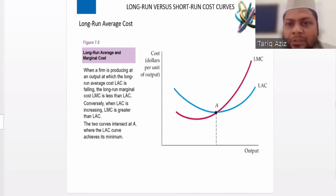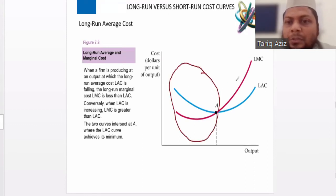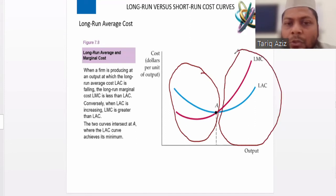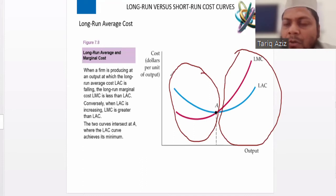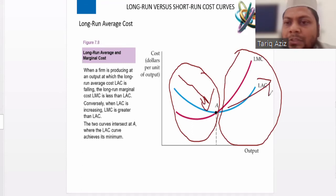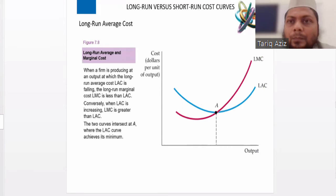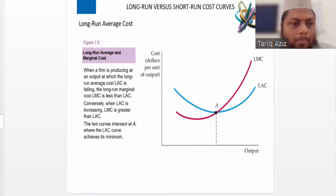So this area is for economies of scale and this area is for diseconomies of scale. Why? Because in this area the long run average cost is falling, and in this area the long run average cost is increasing. Is this clear?